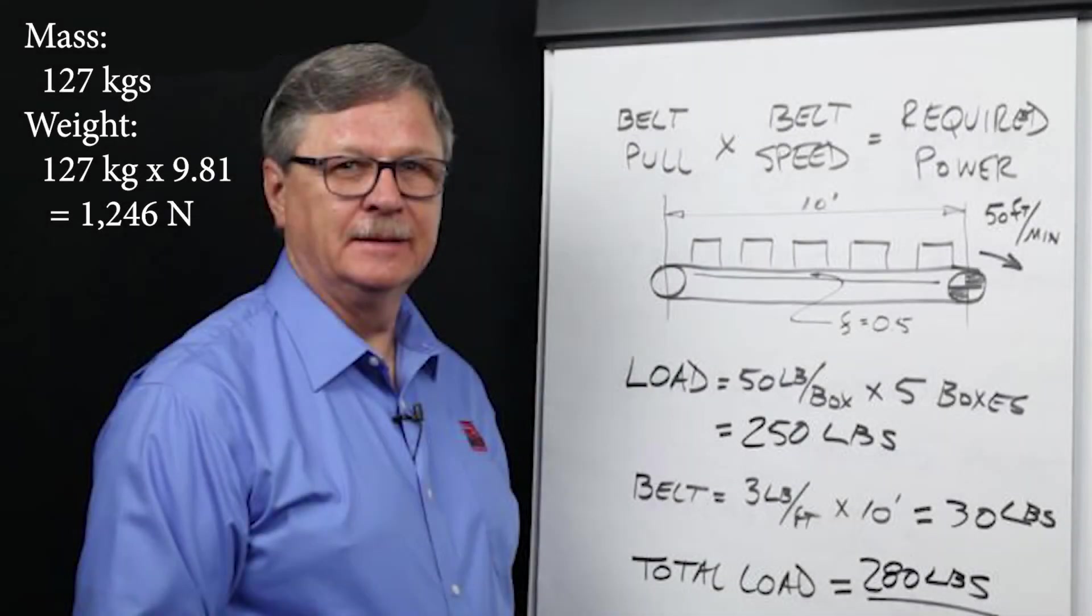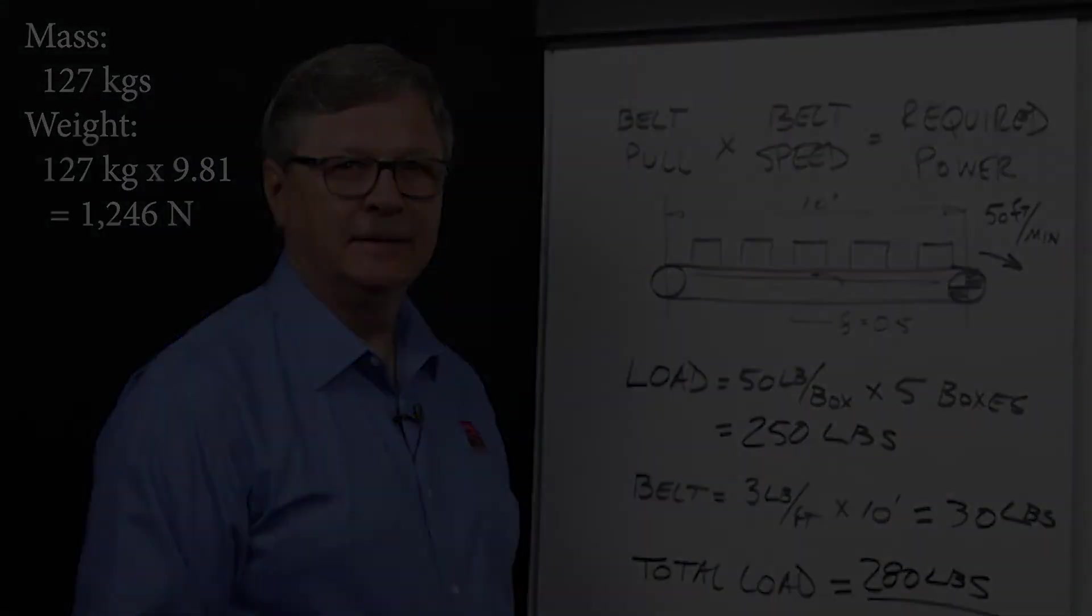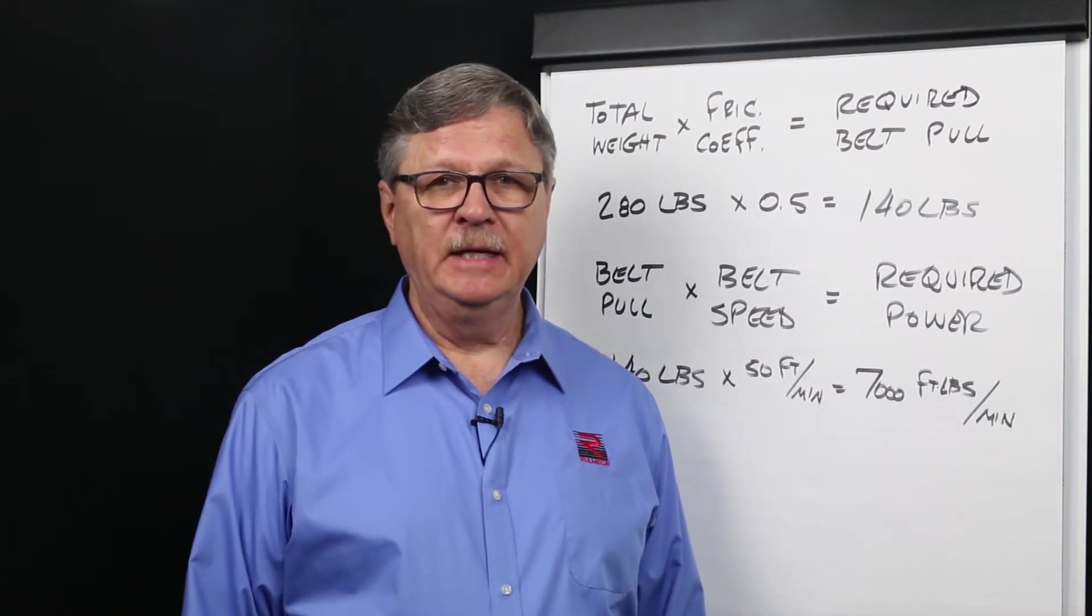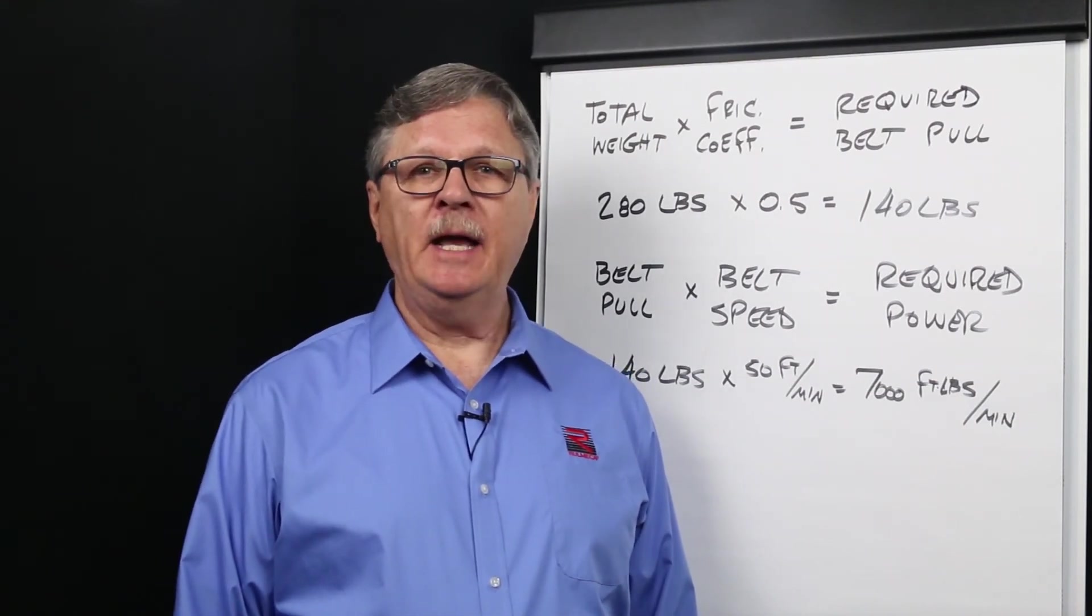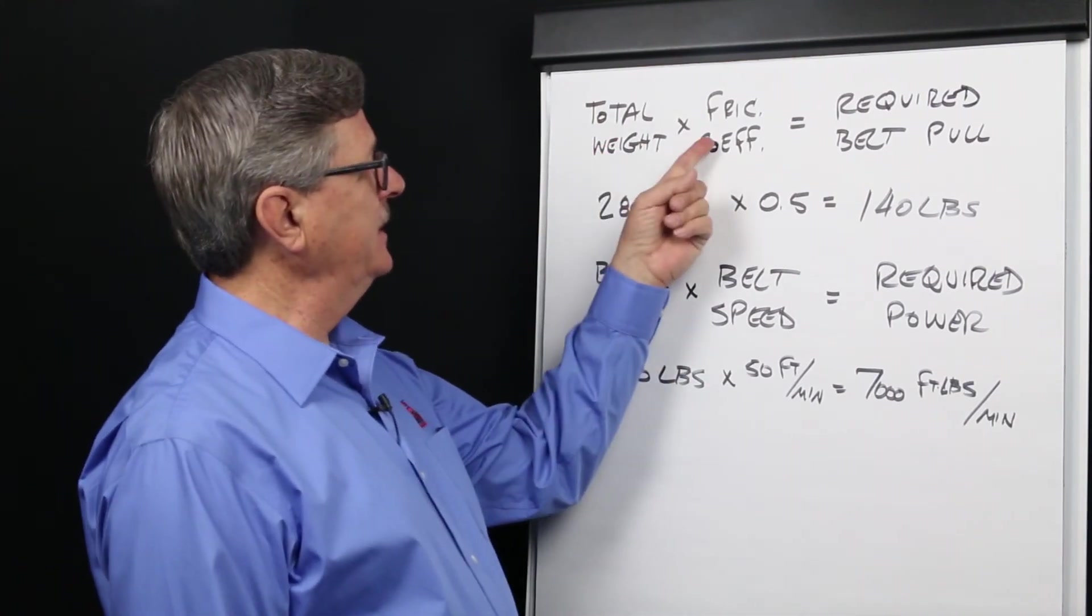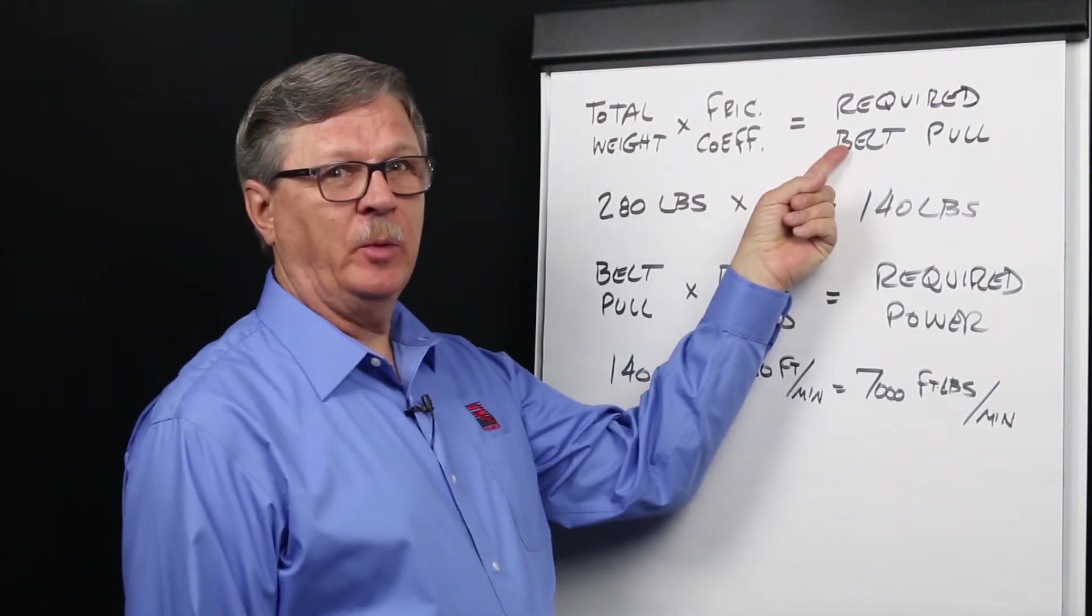In metric units, we can convert units of mass into units of weight by multiplying kilograms by a factor of 9.81 newtons per kilogram. Since the total weight times the frictional coefficient equals belt pull, we can now calculate required power. Total weight times frictional coefficient equals required belt pull.